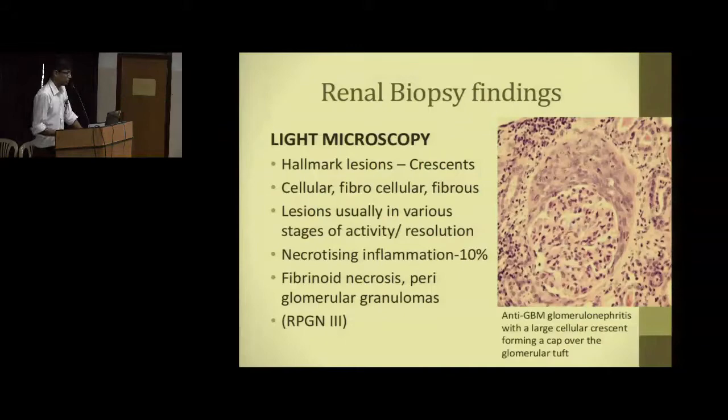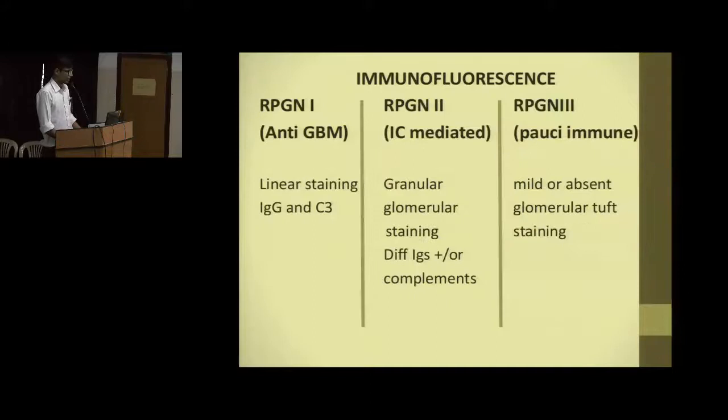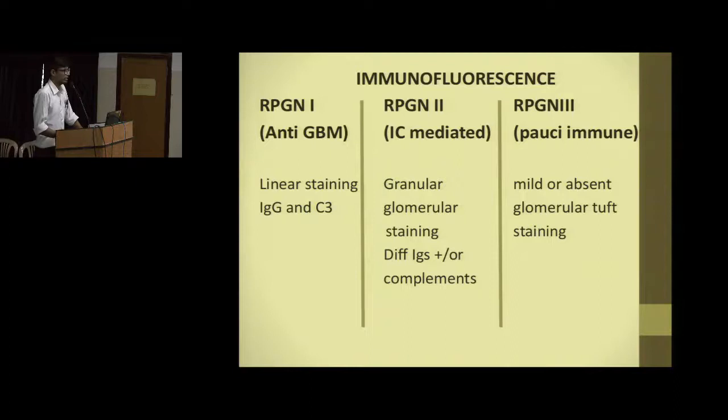On light microscopy, crescents, fibrin depositions, and necrotizing inflammation can be revealed. On immunofluorescence, anti-GBM disease shows linear deposition. Immune complex-mediated disease shows granular fluorescence — scattered deposition throughout the glomerular basement membrane. In pauci-immune RPGN, there are hardly any immune complexes to deposit, so staining of the glomerular tuft will not be prominent.